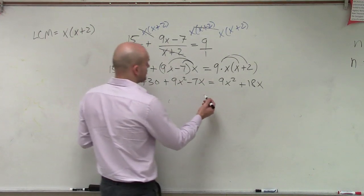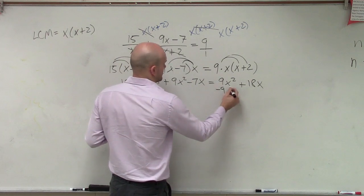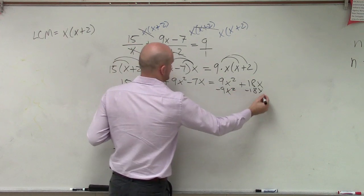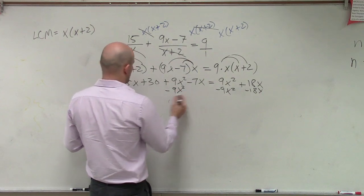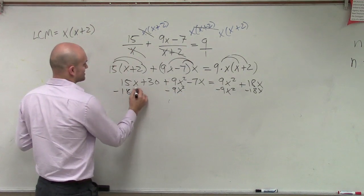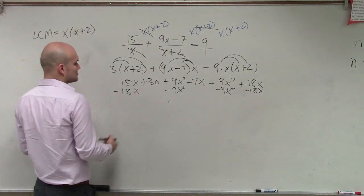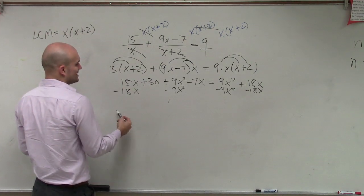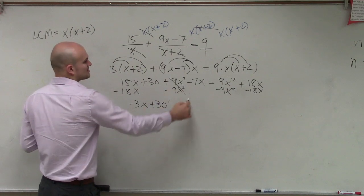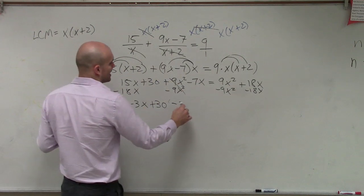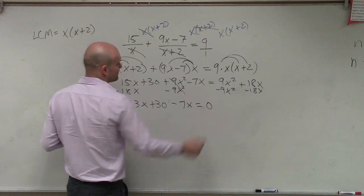So what I'll do is I will subtract a 9x squared, and I'll subtract an 18x. So I subtract 9x squared, and I subtract, let's just do it from here, 18x. So it doesn't matter where I'm subtracting this, 15x minus 18x is a negative 3x plus 30. This subtracts to 0 minus 7x equals 0.